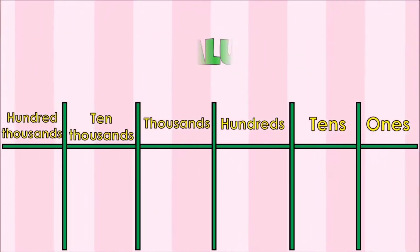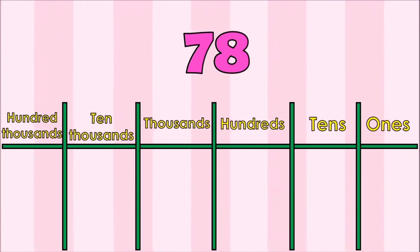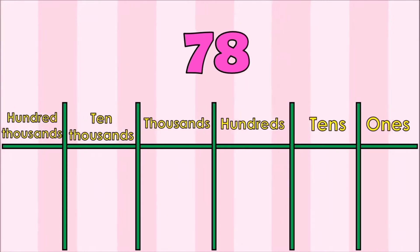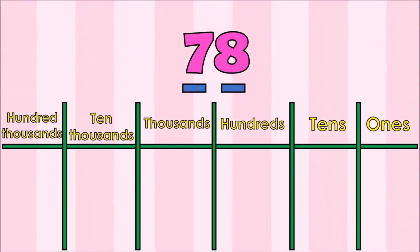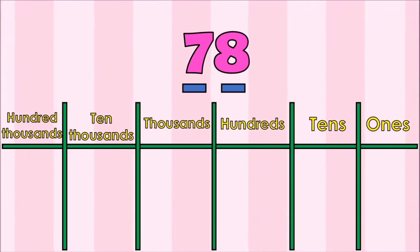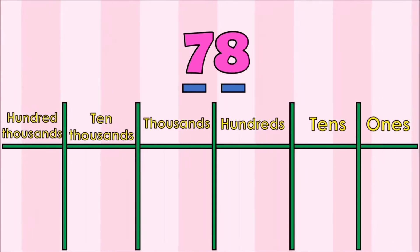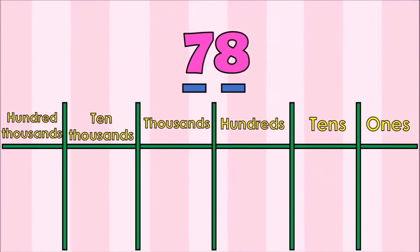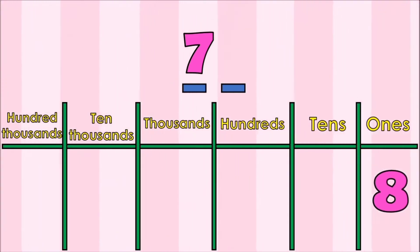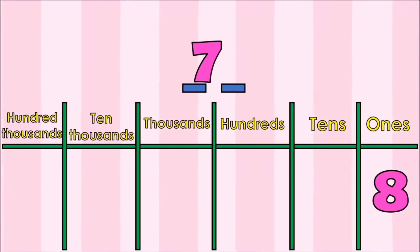For example, I have 78. Number 78 has 2 digits: 8 and 7. Now, let's place each digit in the place value chart. What is the place value of 8? It's in ones. How about 7? It's in tens.